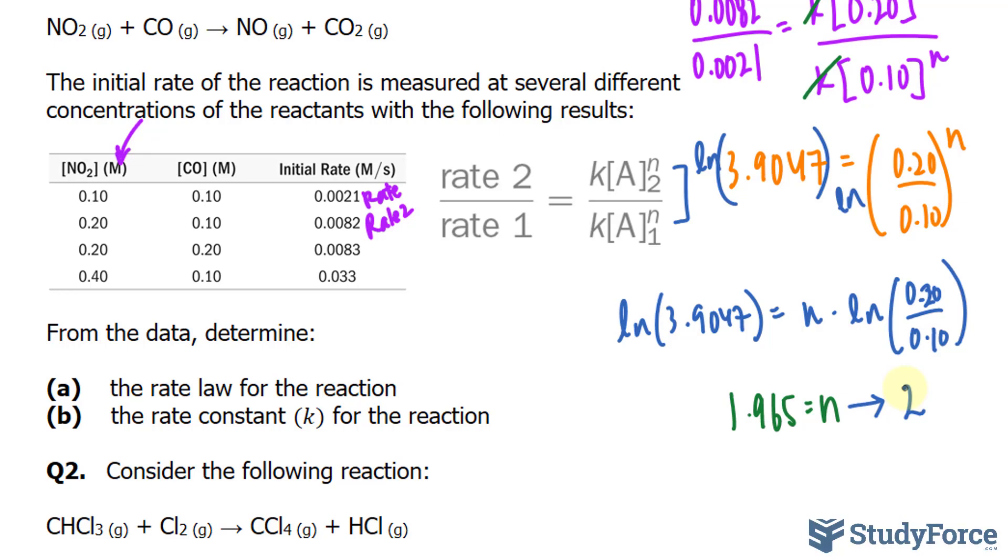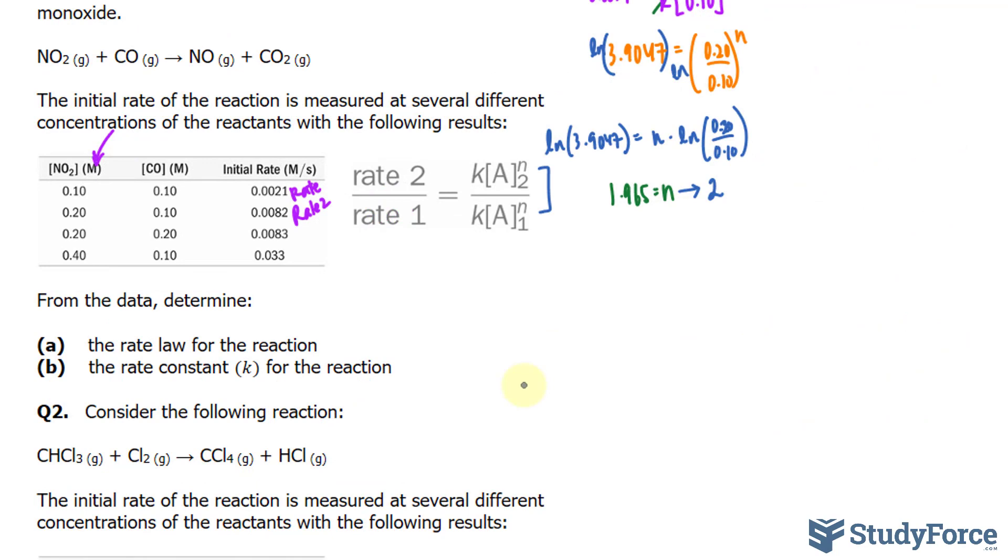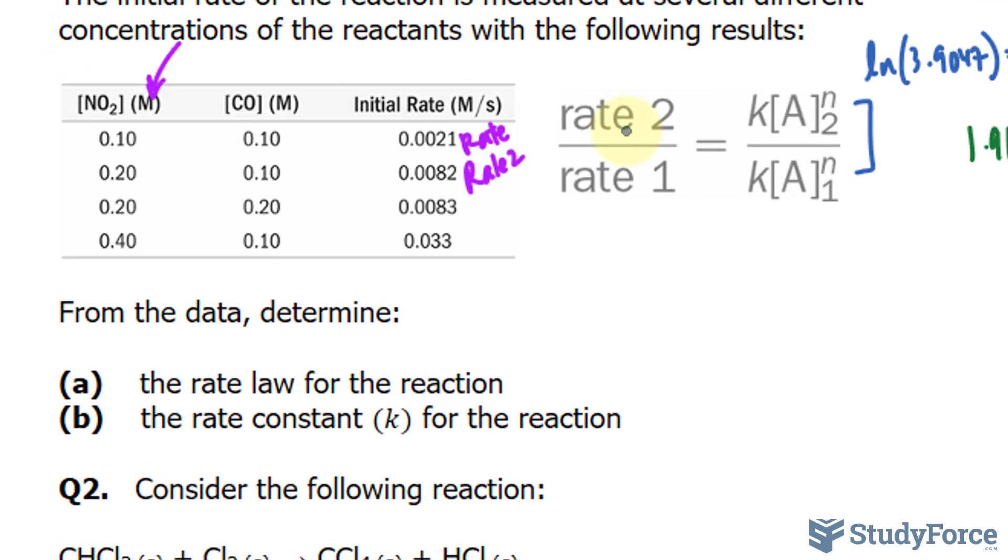Let's see what we learn about carbon monoxide. Once again, we'll use the exact same formula. And notice that from here to here, the concentration of carbon monoxide stayed the same. So we don't want to use these two rates. Rather, we'll use these two rates.